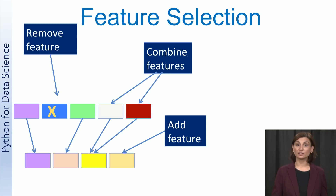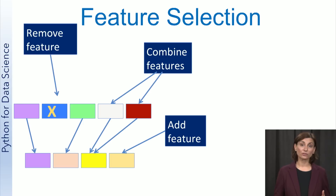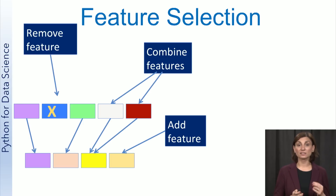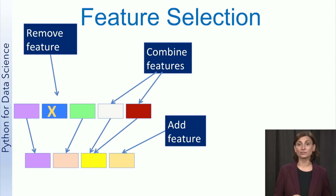Removing redundant or irrelevant features will make the subsequent analysis simpler. In other cases, you may want to combine features or create new ones. For example, adding applicants' education level as a feature to a loan approval application would make sense. There are also algorithms to automatically determine the most relevant features based on various mathematical properties.